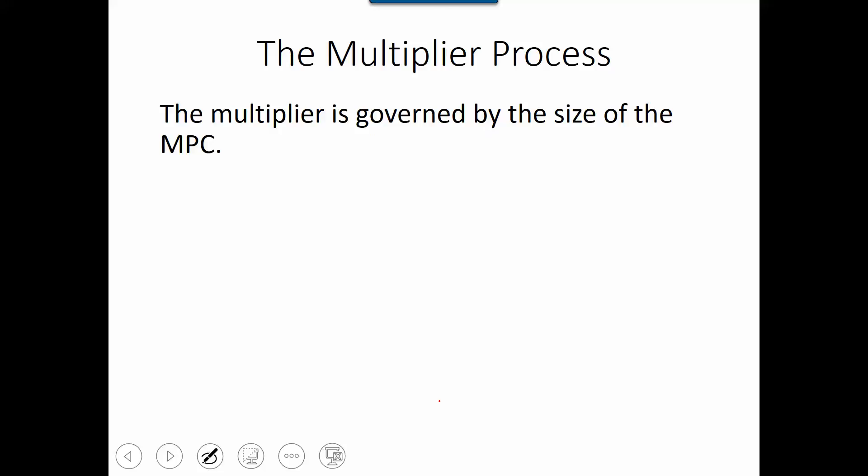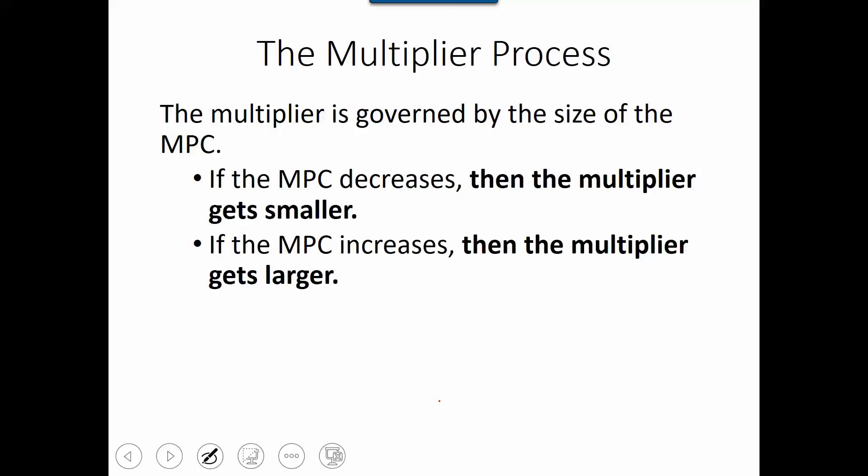So the multiplier is governed by the size of the marginal propensity to consumption. So if marginal propensity to consumption decreases, then the multiplier will get smaller.